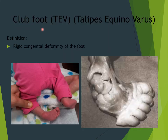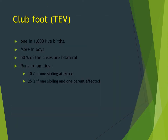The first condition we're going to talk about is club foot, sometimes called talipes equinovarus. It is a rigid congenital deformity of the foot — it cannot be a flexible deformity. Club foot is a relatively common condition, occurring in one in 1000 live births, so it is not rare.